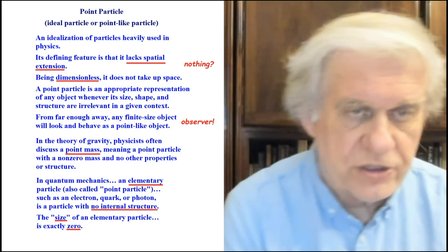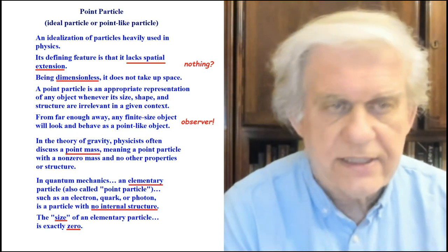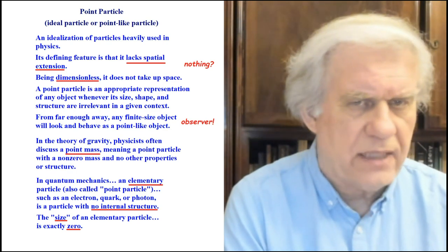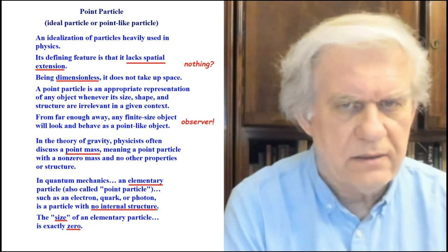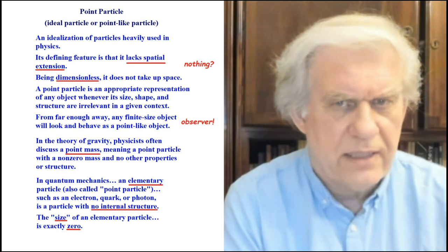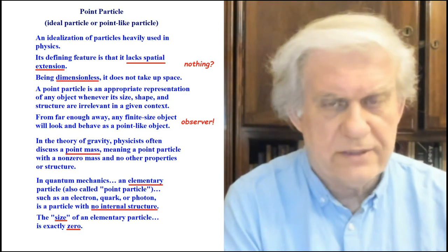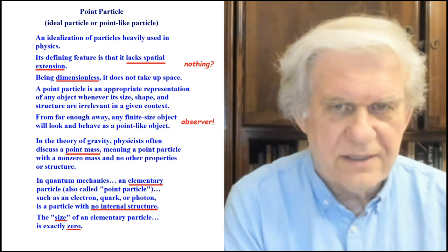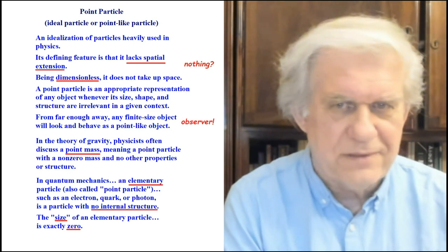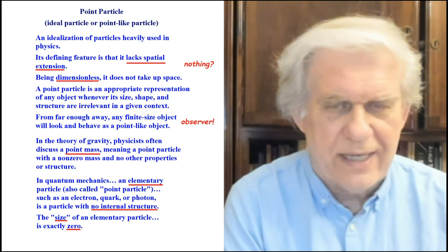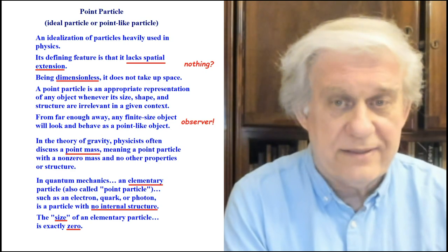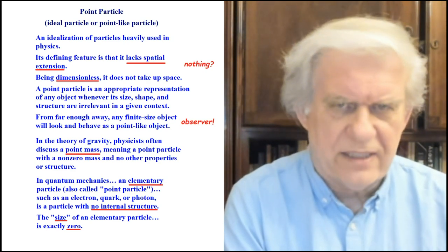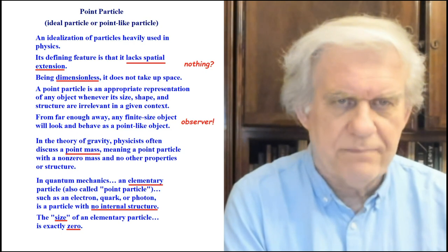Wikipedia says the defining feature of a point particle is that it lacks spatial extension. Well, if it lacks spatial extension, it looks like they're defining nothing — the word 'nothing.' When you say something has no body, no dimension, no radius, no diameter, no length, no size — that's the definition of nothing, not of something.